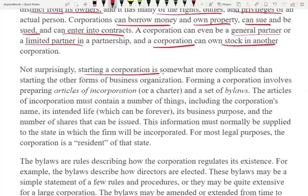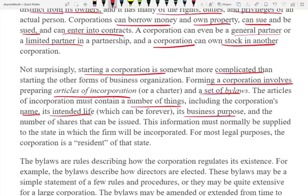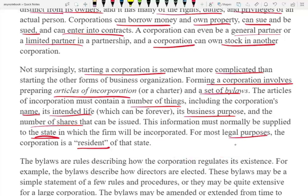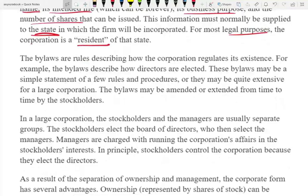Starting a corporation is somewhat more complicated than a sole proprietorship or partnership. Forming a corporation involves preparing articles of incorporation and a set of bylaws. The articles must contain the corporate name, its intended life, the business purpose, and the number of shares that can be issued. This information must be supplied to the state — corporations are born in a state, and for most legal purposes the corporation is a resident of that state. Most U.S. corporations incorporate in Delaware because they don't have a state income tax.